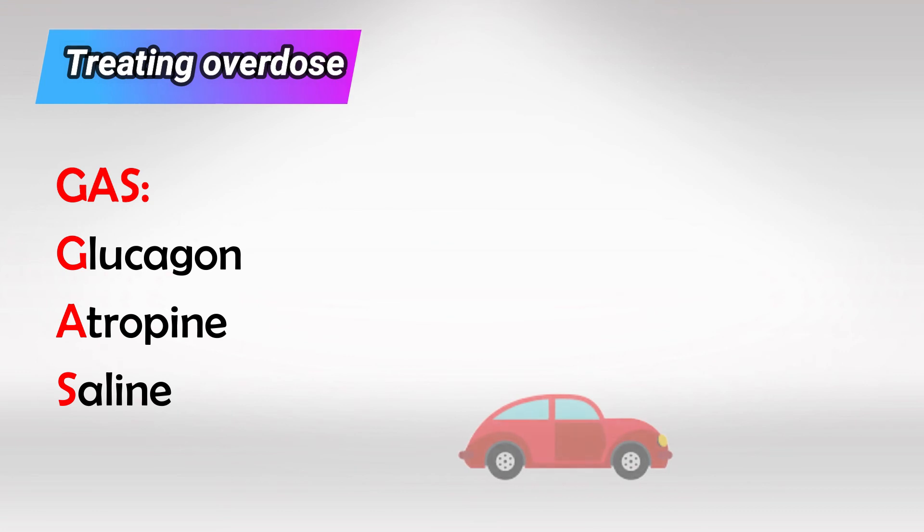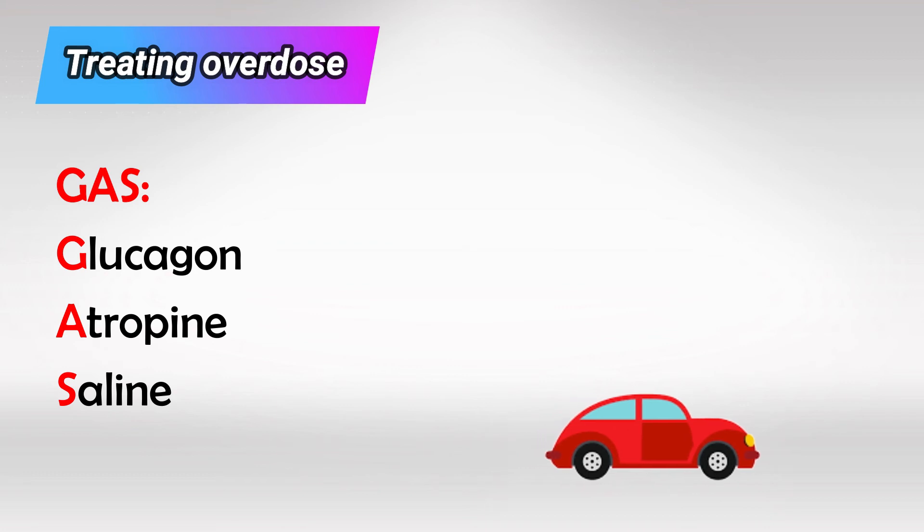To remember the antidote for beta blockers, I remember GAS, because they slowed down the heart. They slowed down the car, and you need gas to speed up the car.